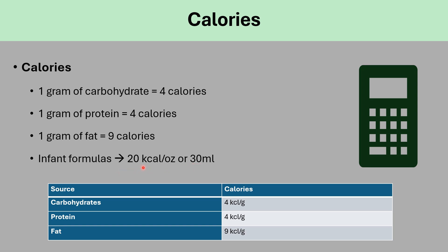This will apply to breast milk and formula as well. Carbohydrate: four calories. Protein: four calories per gram. And fat is nine calories per gram.